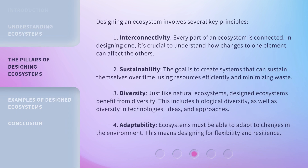Designing an ecosystem involves several key principles. One: interconnectivity. Every part of an ecosystem is connected. In designing one, it's crucial to understand how changes to one element can affect the others. Two: sustainability. The goal is to create systems that can sustain themselves over time, using resources efficiently and minimizing waste.